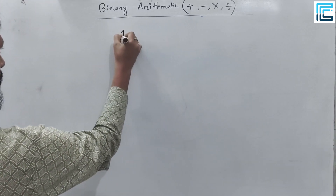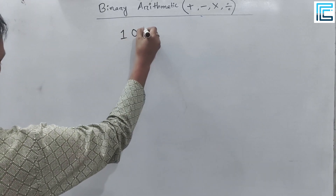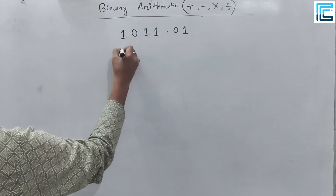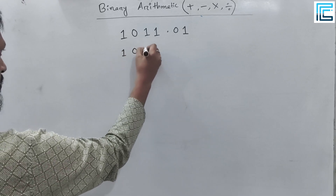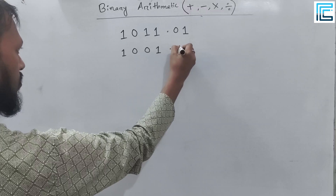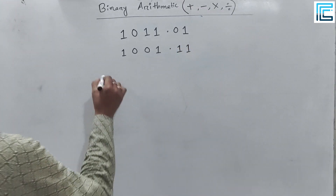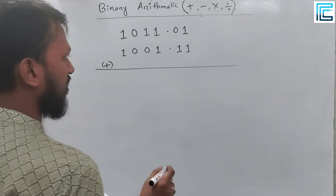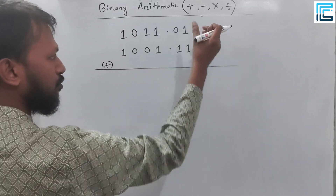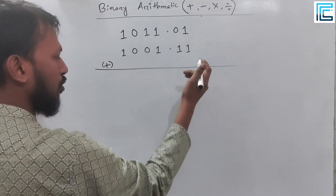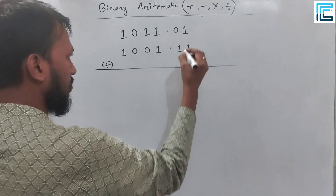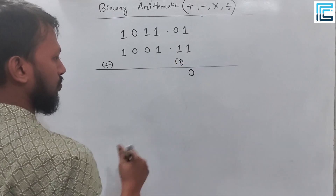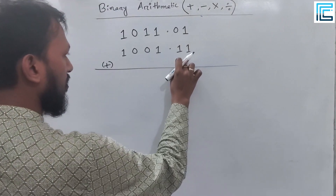For example, consider the binary numbers 1.0 and 1.1, and also 0.1 and 1.0. We will add these binary numbers applying the addition rules we just discussed.